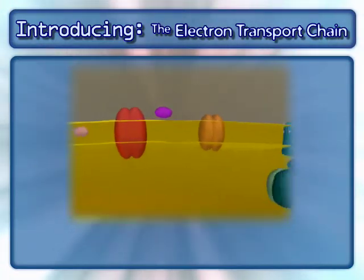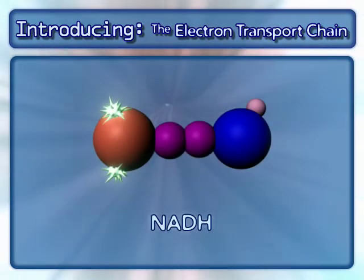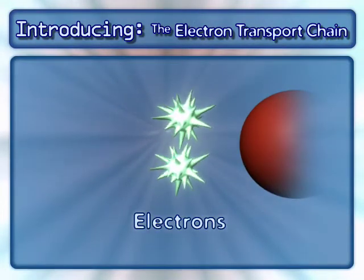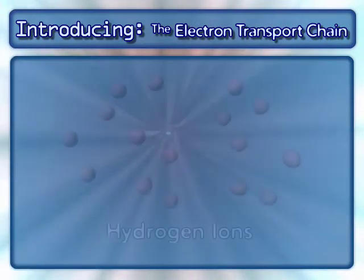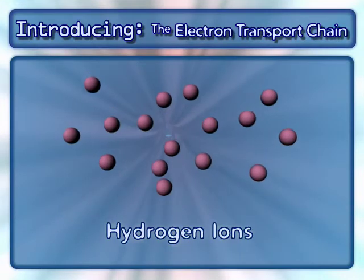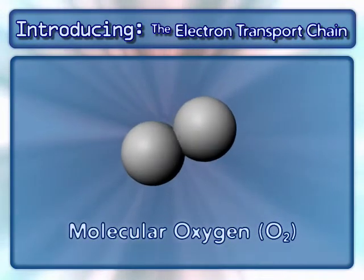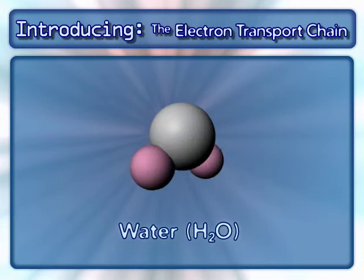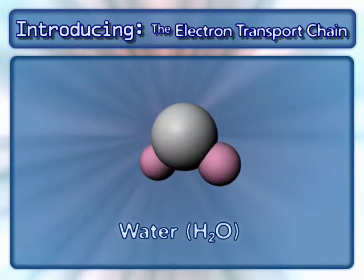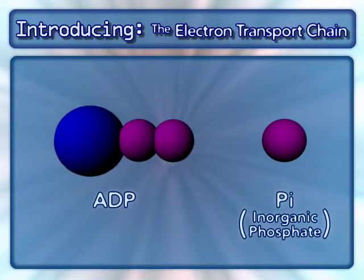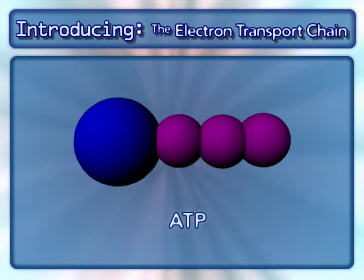Other key components in this process are NADH and the electrons from it, hydrogen ions, molecular oxygen, water, and ADP and inorganic phosphate, which combine to form ATP.